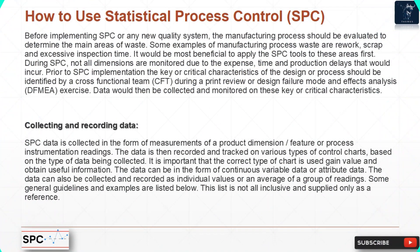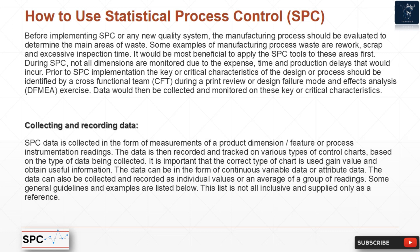How to use SPC: Before implementing SPC or any new quality system, the manufacturing process should be evaluated to determine the main areas of waste. Examples of manufacturing process waste include rework, scrap, and excessive inspection time — it is most beneficial to apply SPC tools to these areas first. Not all dimensions are monitored due to expense and production delays. Key or critical characteristics of the design or process should be identified by a cross-functional team (CFT) during a print review or Design Failure Mode and Effects Analysis (DFMEA) exercise. Data is then collected and monitored on these key characteristics.